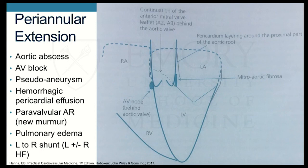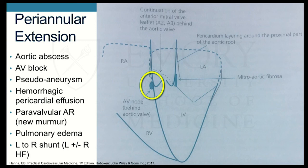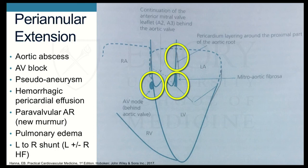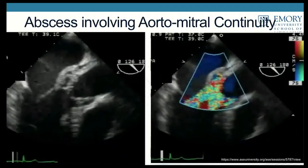Something to look for especially with aortic valve endocarditis is periannular extension. Once bacteria create an abscess at the annulus, they can cause many problems. The weakest part of the annulus is the interatrial septum — where the AV node is located — causing heart block. The abscess can communicate with the pericardial layer causing hemorrhagic pericardial effusion, travel to the aortomitral curtain creating a two-valve problem, or communicate with chambers causing pulmonary edema, paravalvular AR, or left-to-right shunt.